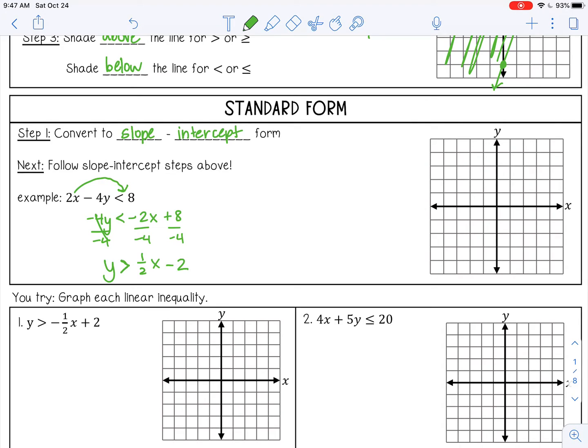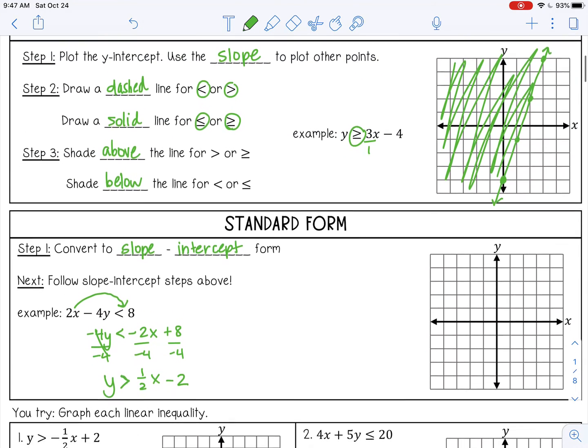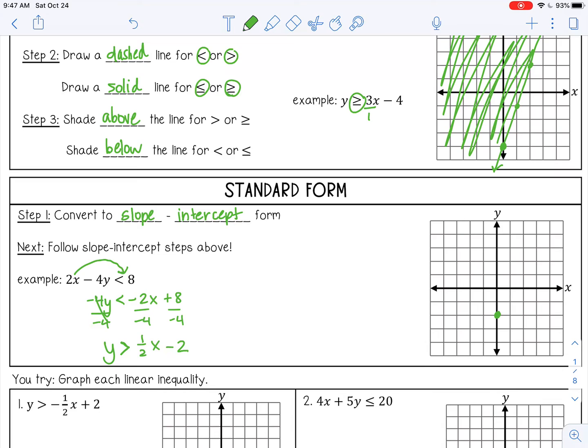Once you have it in slope-intercept form, follow the steps above. Step 1: plot the y-intercept at negative 2. Then use the slope—rise 1, run 2, and go the opposite direction. This is just greater than, not greater than or equal to, so instead of a solid line, I'll draw a dashed line. It can go outside the graph. Then, since it's greater than, I want to shade above the line.